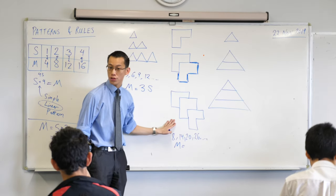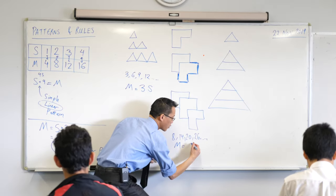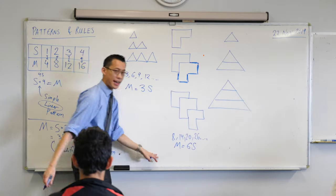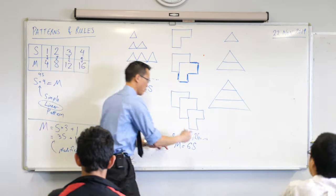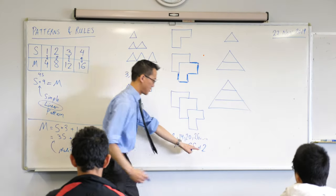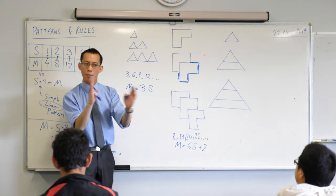And you did the same thing from shape two to shape three. So that's why I hope you worked out the rule was six s, m equals six s, plus two, because if you don't have that plus two here, all of your numbers are off by the wrong amount.